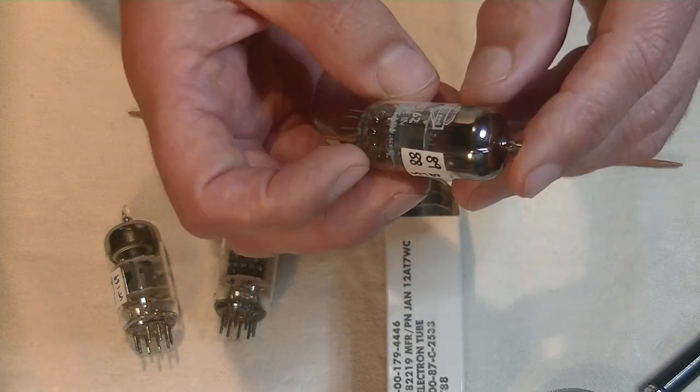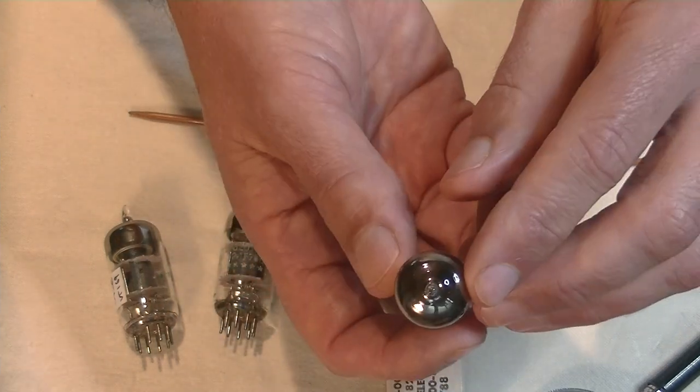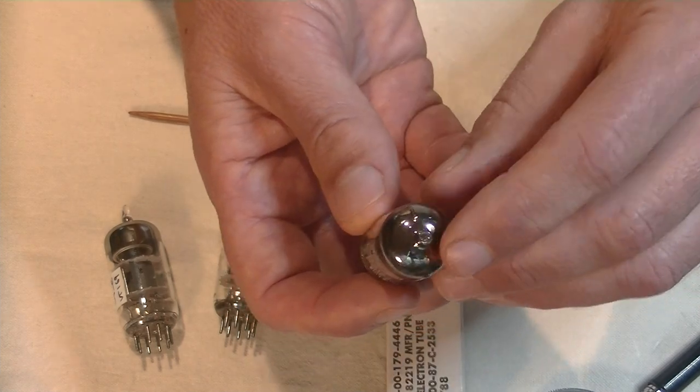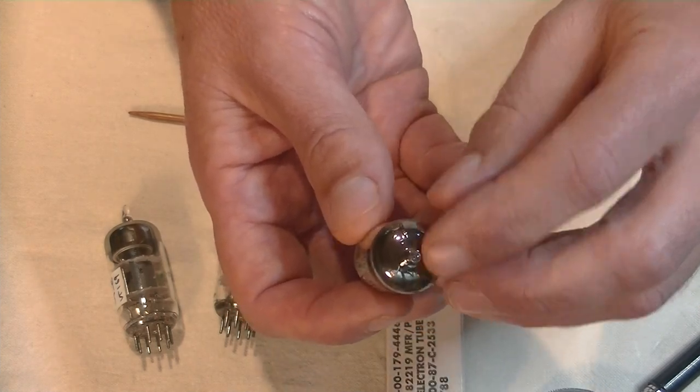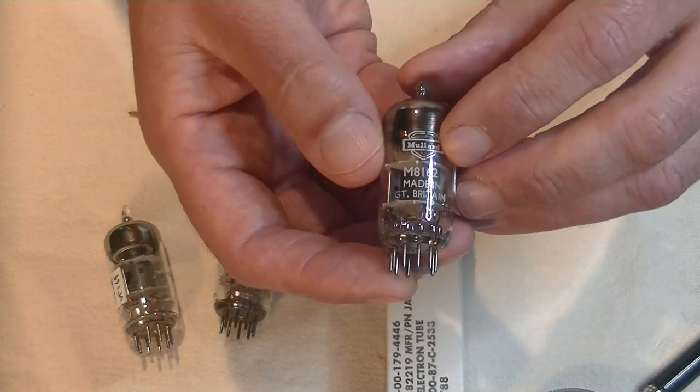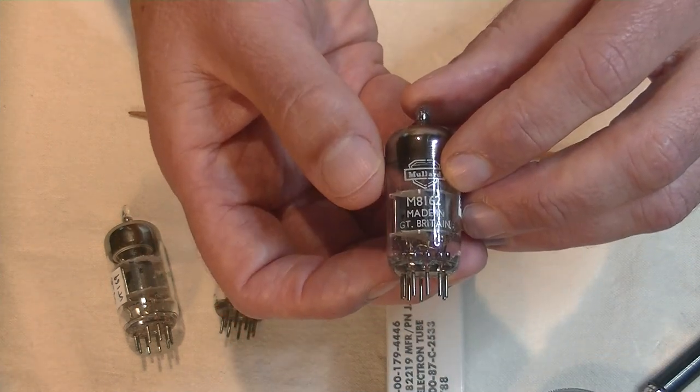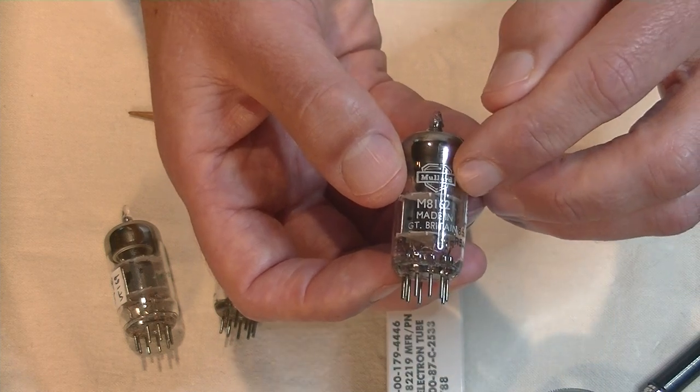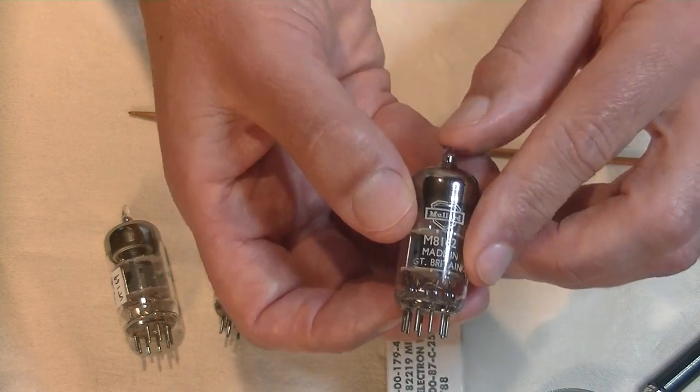So how do I identify a real Mullard? We've talked about this before. We've got two seams for the glass molding. That's how the glass is made. We've got a nice description of what this tube is here, and that makes me suspicious.